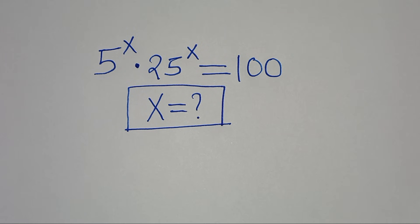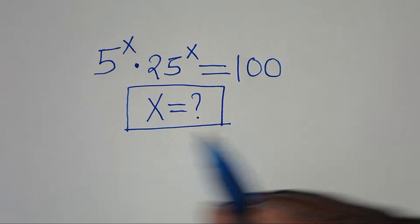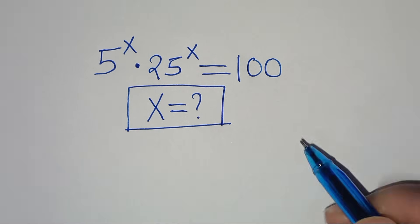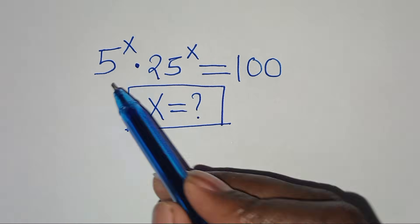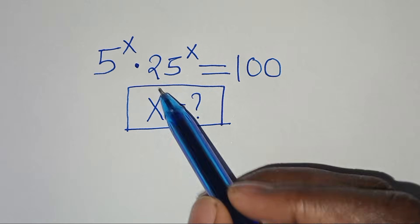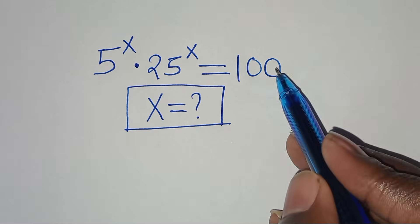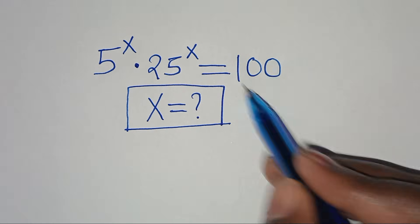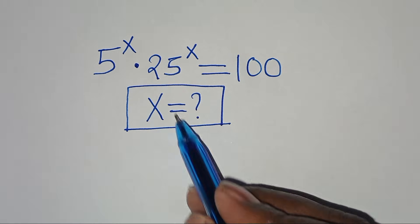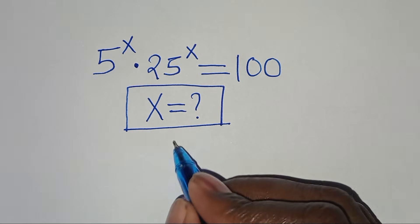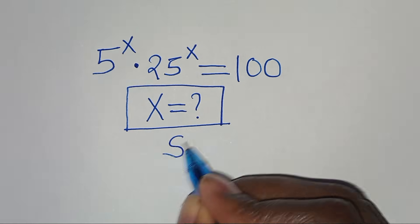Hello everyone, you are welcome to solve this nice exponential equation: 5 to the power of x times 25 to the power of x equals 100. What is the value of x?